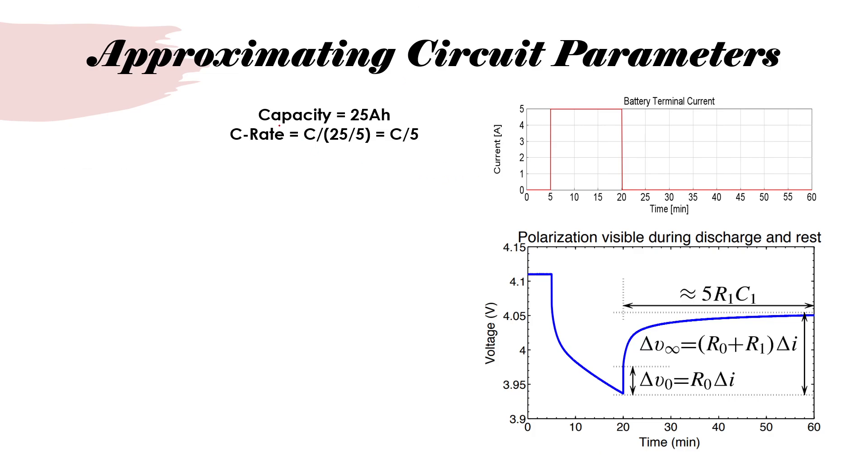This will give you at least a ballpark value of these circuit parameters. We assume a capacity of 25 ampere hour for the cell, a C rate of C by 5 is applied. We give a pulse for 15 minutes or 5 amps and then bring the current back to zero. For the given current pulse at the bottom, you can see the voltage response. Now, there are different segments. For example, this segment here represents the ohmic resistance.